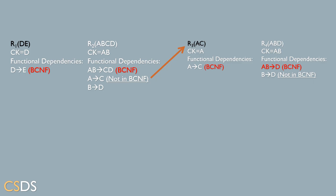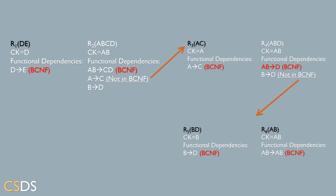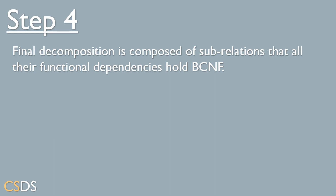Since B→D violates BCNF, we repeat step two for this functional dependency, creating two sub-relations BD and AB. BD has candidate key B, so B→D is in BCNF. The relation AB has candidate key AB, so AB→AB is also in BCNF. We do not need to decompose the relations any further. Our final decomposition consists of the sub-relations where all functional dependencies hold BCNF.